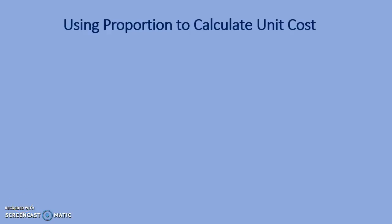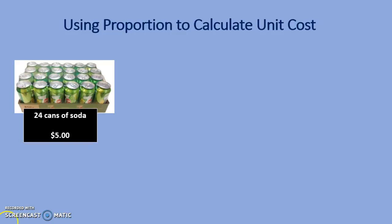In this video, you will learn how to use proportion to calculate unit cost. 24 cans of soda cost $5. Calculate the unit cost. We want to know the price of one can of soda. Remember, when using proportions to solve for a missing value, focus on setting up the correct proportion.